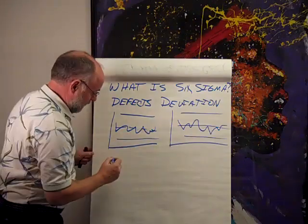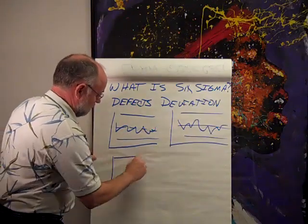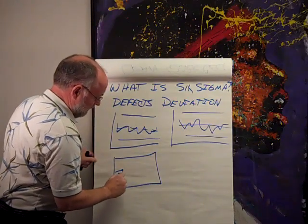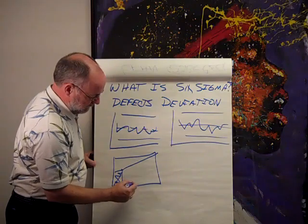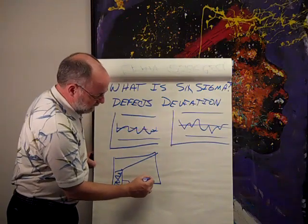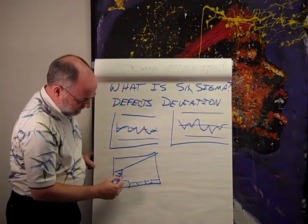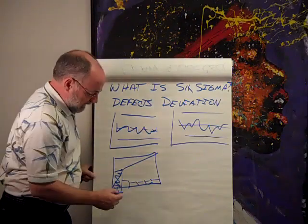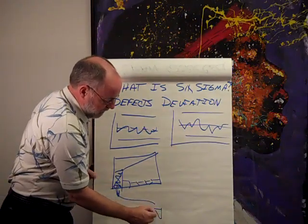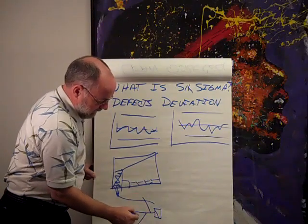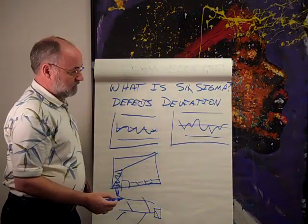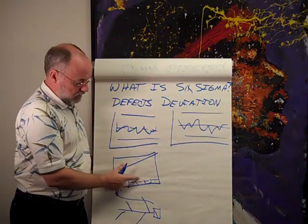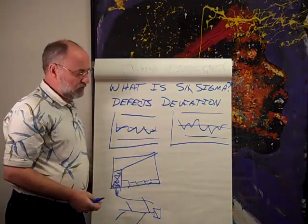With defects, we are going to do a series of Pareto charts. We are looking for the big bar. We may have several layers of Pareto charts and may have to take things down another level. Then we take that big bar and it becomes the head of our fish bone, and we can start doing root cause analysis. So for defects, we use control charts, Pareto charts, and fish bones to solve most of our problems.